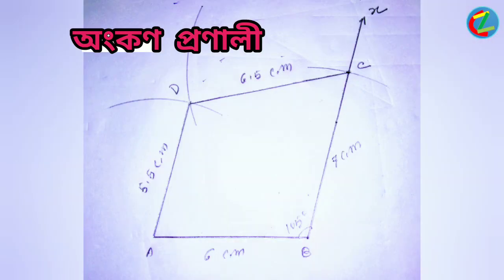So AB is equal to 6 cm. BX is equal to 5 degree, or BX is equal to 7 cm. CX is equal to 5 degree with six point five centimeter. DX is equal to five point five centimeter by heart.